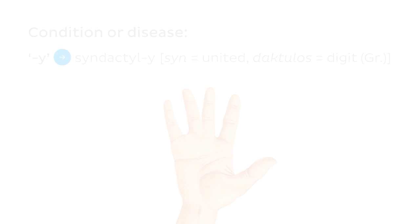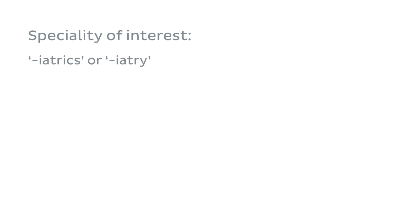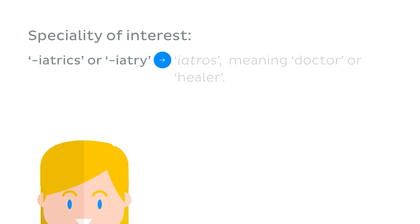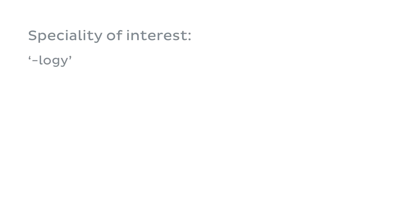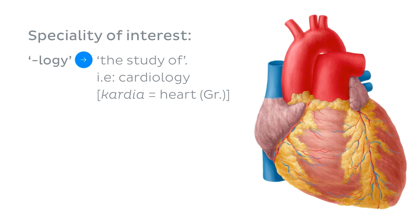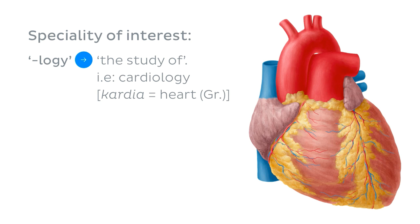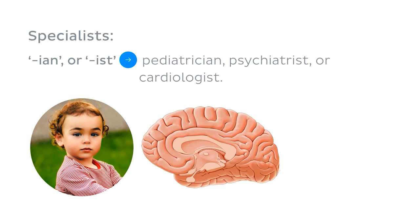We also use suffixes to denote specialties or fields of interest in almost every healthcare discipline, such as '-iatrics' or '-iatry,' both derived from the Greek 'iatres' meaning doctor or healer, referring to a field of medical treatment like pediatrics or psychiatry. Another commonly seen suffix is '-logy,' meaning the study of something — for example, cardiology, the study of the heart. We can also derive the names of specialists by adding the suffix '-ian' or '-ist,' as in pediatrician, psychiatrist, or cardiologist.